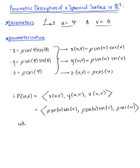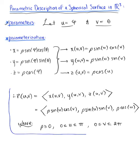This is where rho is greater than or equal to zero, u is greater than or equal to zero and less than or equal to pi, and v is greater than or equal to zero and less than or equal to 2 pi. This provides us with that new two-parameter description of a spherical surface in three dimensions.